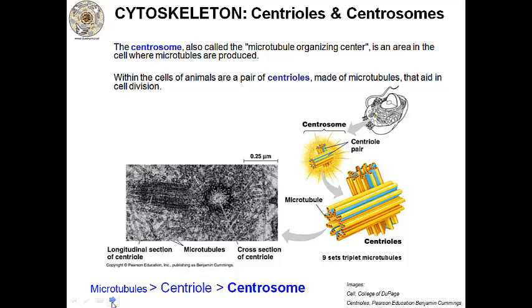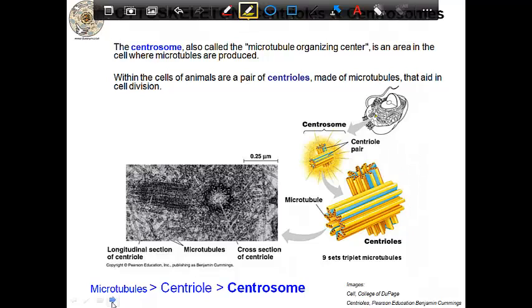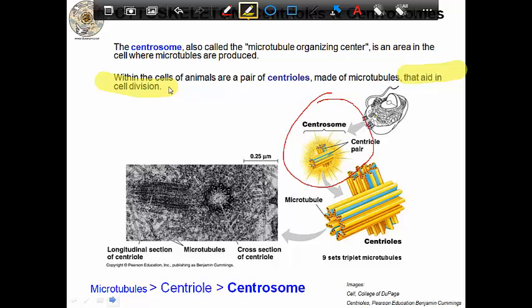Microtubules can make centrioles and centrosomes. The centrosome is the larger area in the cell — you can see it here. Each centrosome is made of two centrioles, and those centrioles help the cell to divide. Essentially, the centrosome is an area where you find two centrioles, and the centrioles help the cell to divide. They're all made out of microtubules. Down at the bottom there's a flow chart showing that a bunch of microtubules together make a centriole.